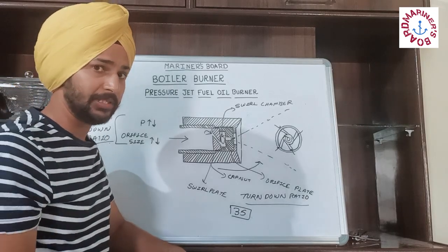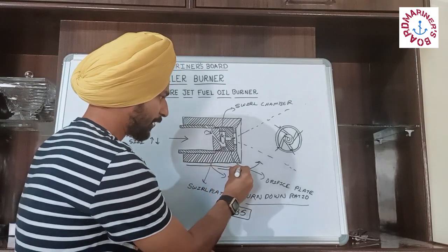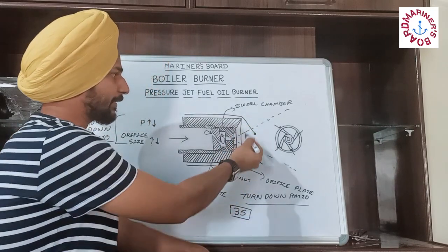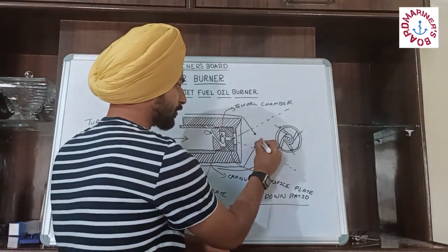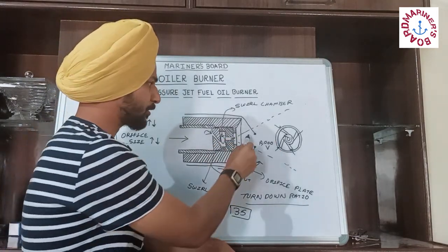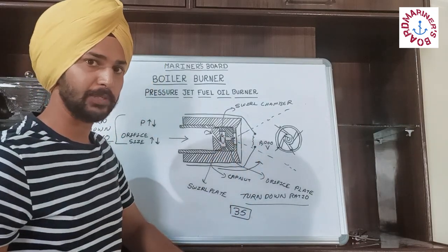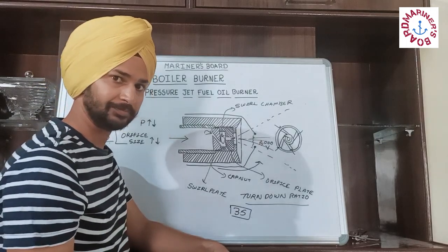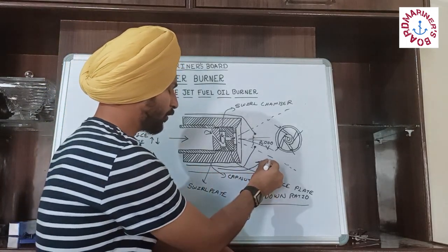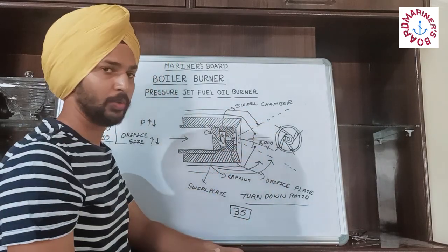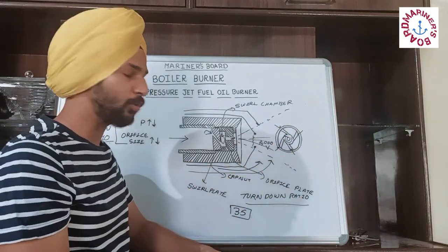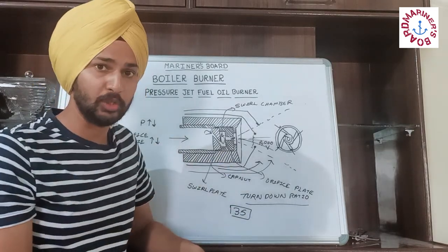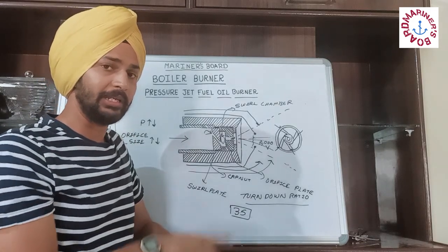In addition, the pilot burner has two electrodes coming from the sides. The voltage between these two electrodes is 10,000 volts. When 10,000 volts is supplied between these two electrodes, a spark is produced. When the spark comes in contact with the diesel oil that is sprayed onto it, it catches fire. Air is flowing from the sides of these two electrodes so that atomization and mixing of fuel can occur. This is the design of the pilot burner, which is also a type of pressure jet burner.